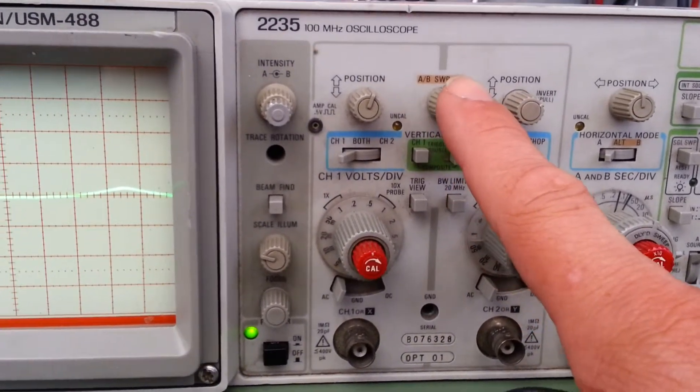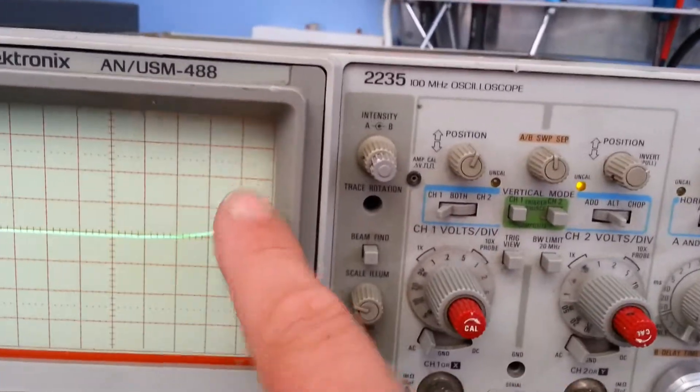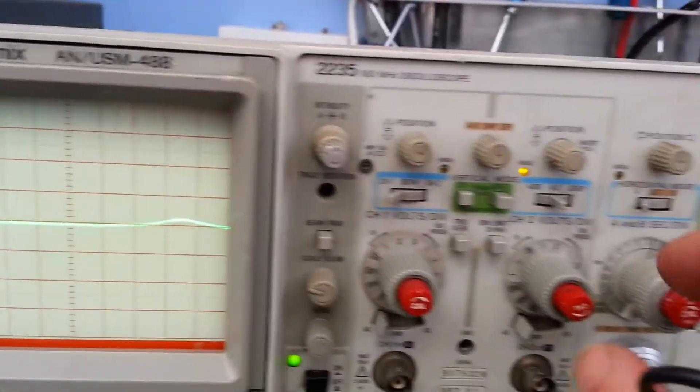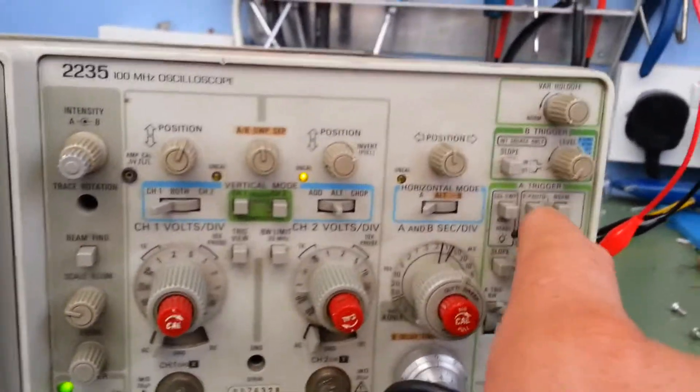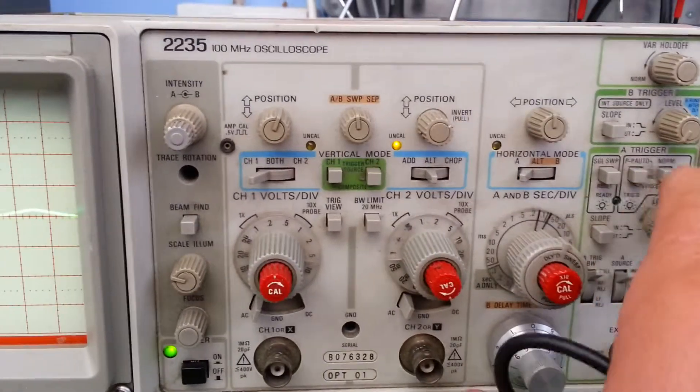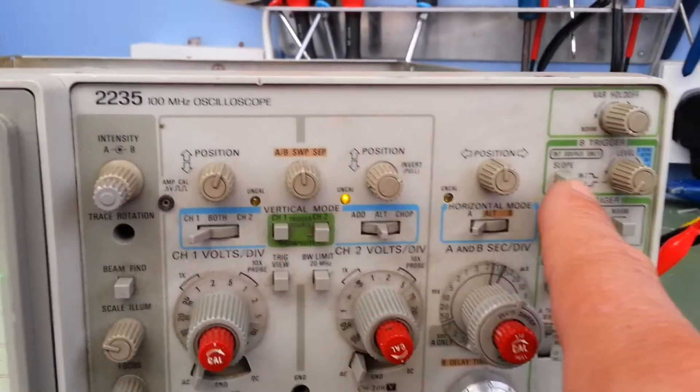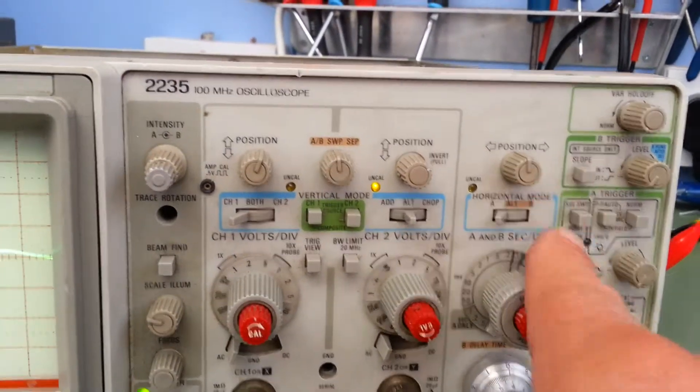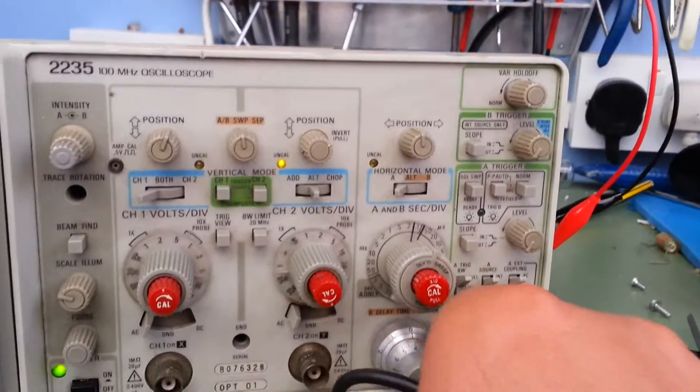A and B sweep separation. So I assume that means that when you're on A and B it keeps the separation of the sweeps apart on the scope. You've got the normal mode for triggering and auto and the free run which it is now. And then you've got TV field if you press them both together. You've got positive and negative going slopes which is what you expect to see on all trigger menus. You know, so you can trigger on the leading or the falling edge.